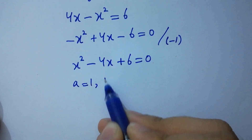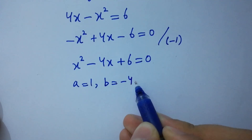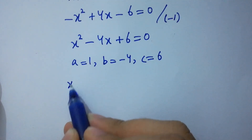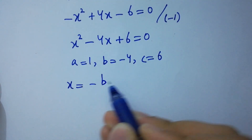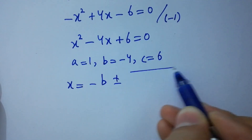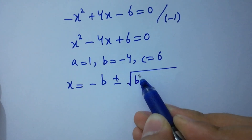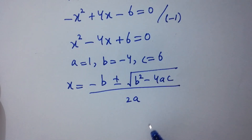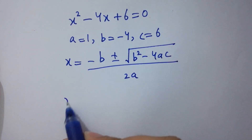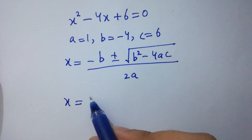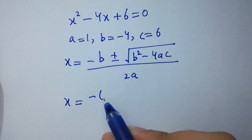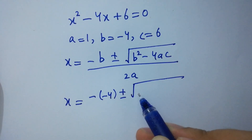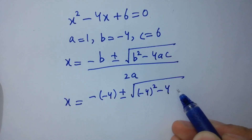Here a equals 1, b equals minus 4, and c equals 6. Applying the quadratic formula: x equals negative b plus or minus square root of (b² minus 4ac) over 2a. Substituting: x equals negative (minus 4) plus or minus square root of (minus 4)² minus 4 times 1 times 6, over 2 times 1.